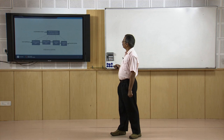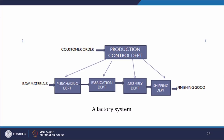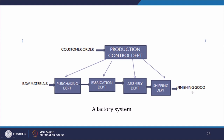For example, if there is a production control department with customer orders coming in and raw materials arriving, those orders can be communicated to departments. Raw material goes to the purchasing department, then to the fabrication department, after fabrication it goes to assembly, after assembly to shipping, and the result is the finished goods. This is what we call the block diagram approach for system modeling.